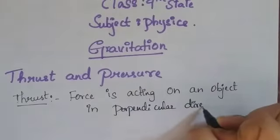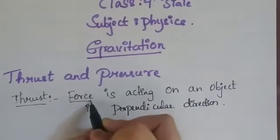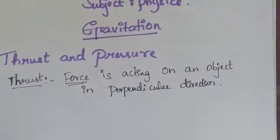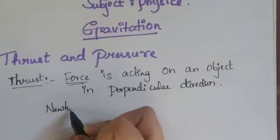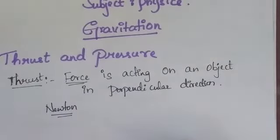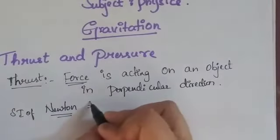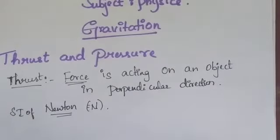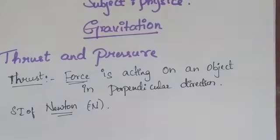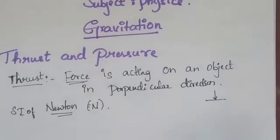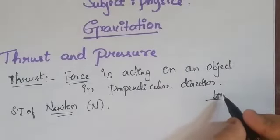So thrust is also a force. Since the SI unit of force is Newton, the SI unit of thrust is also Newton, represented by the capital letter N. Thrust means a force which is acting on an object in perpendicular direction — perpendicular means making an angle of 90 degrees.